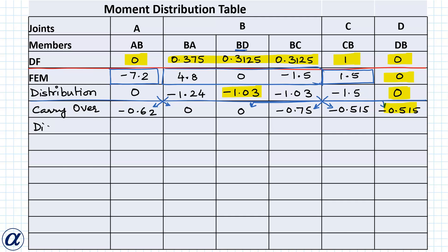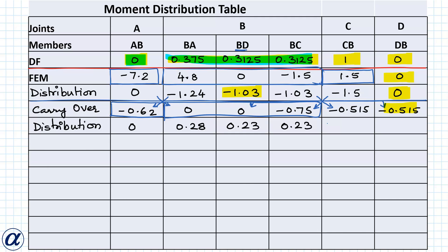Next distribution step: net moment at A is −0.62, but DF = 0, so result is 0. Net moment at B is −0.75, so distributed moment is +0.75, giving 0.28, 0.23, 0.23. Net moment at C is −0.515, distributed as +0.515 with factor 1. Distribution factor at D is 0, so distributed moment is 0.